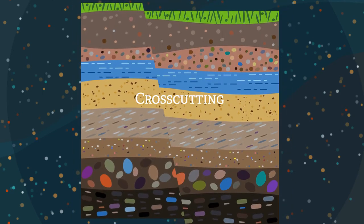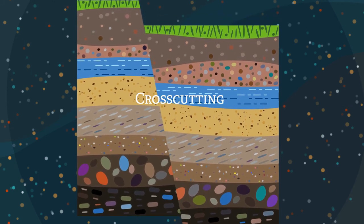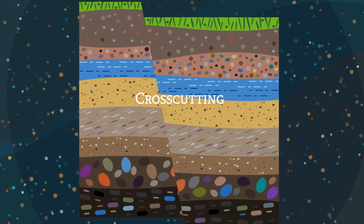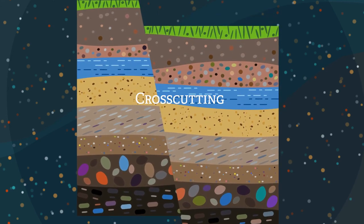Cross-cutting corresponds with superposition. This is when a section of rock moves and causes a shift in the layers, but the layers are still the same age.